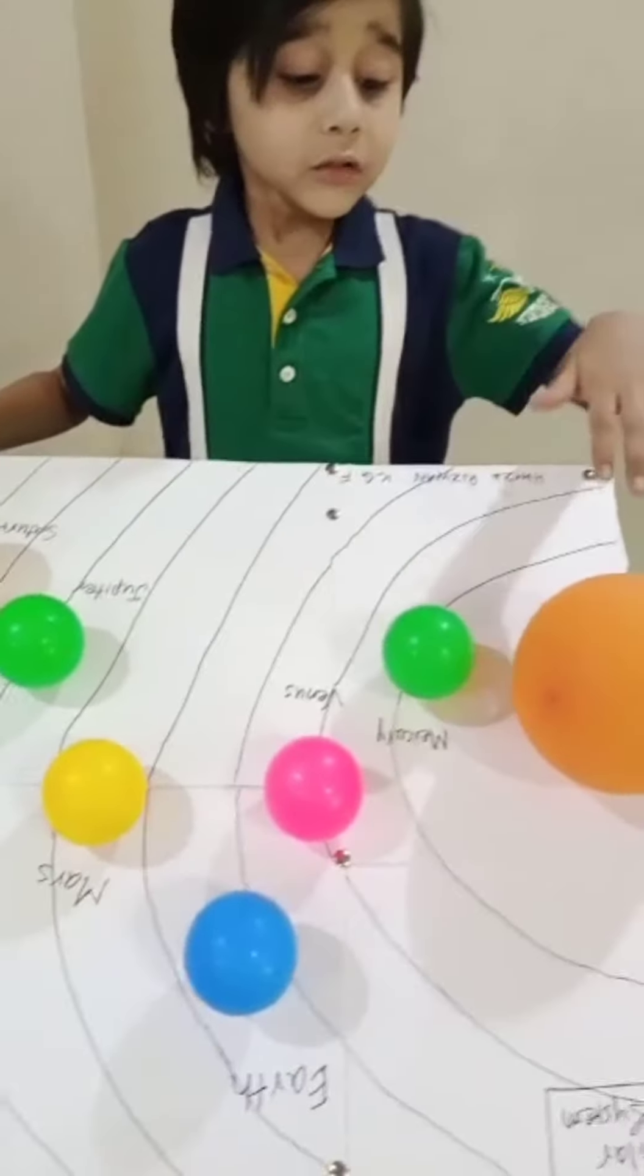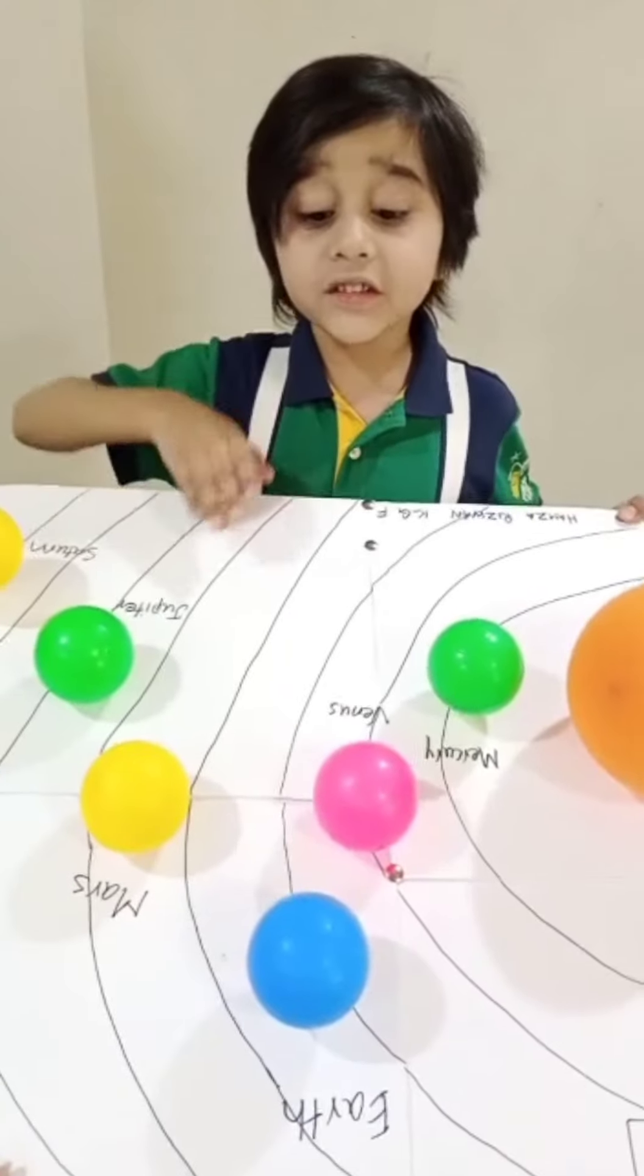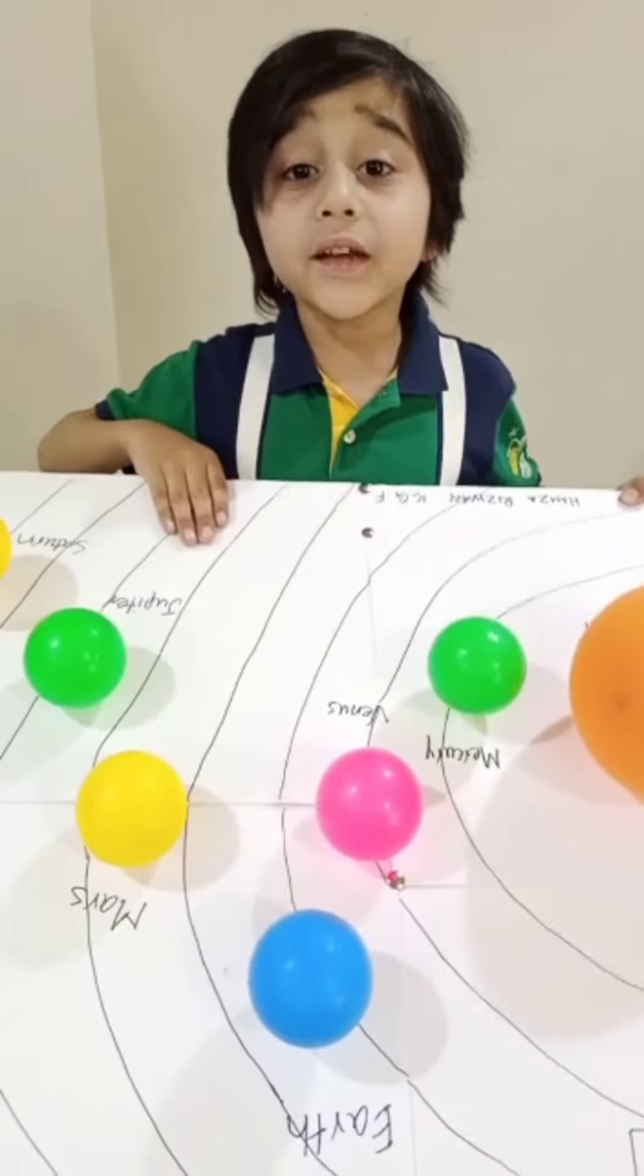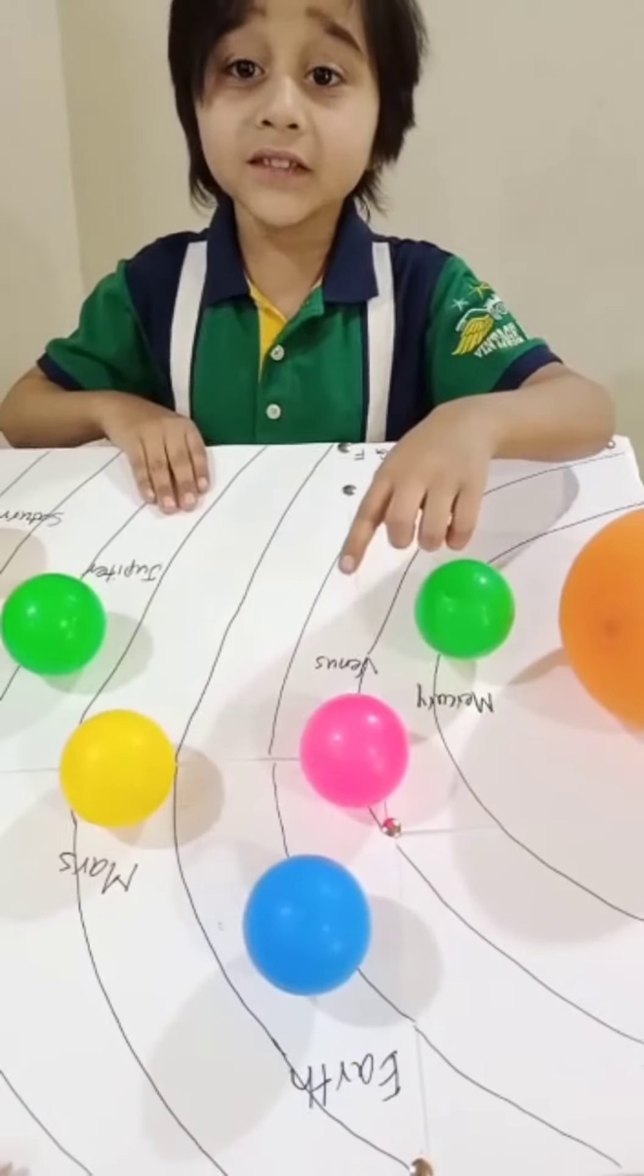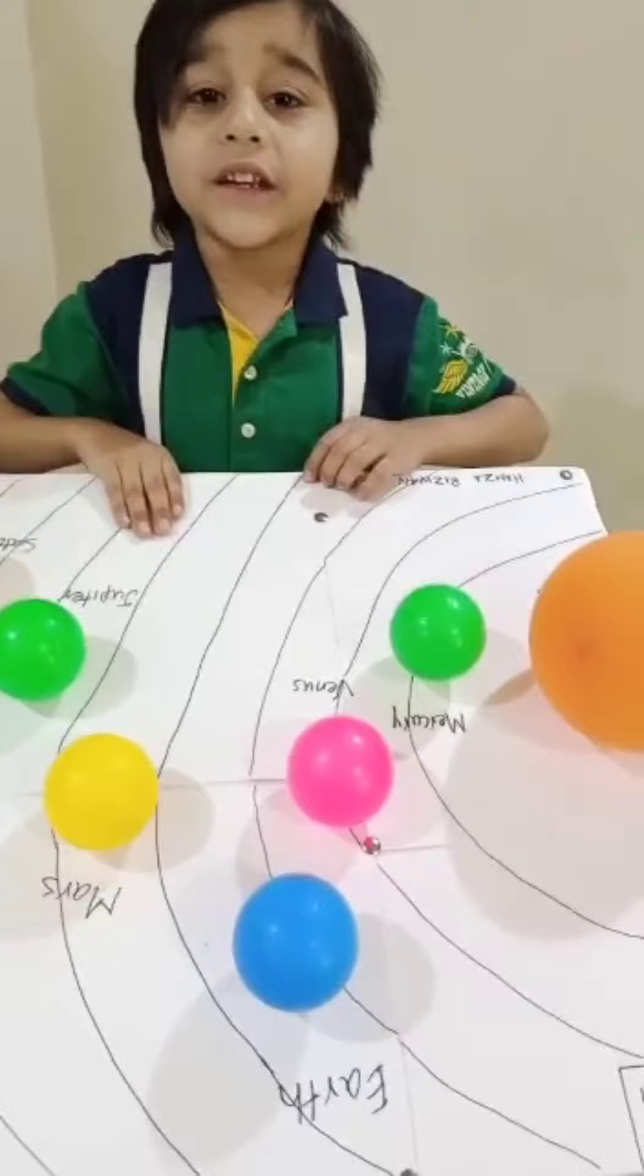It is the closest to the sun. Earth is the third planet. We live on Earth. And this is Venus. Venus is the hottest planet.